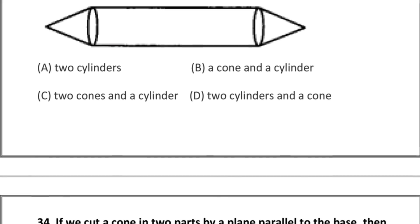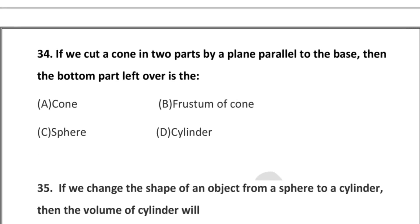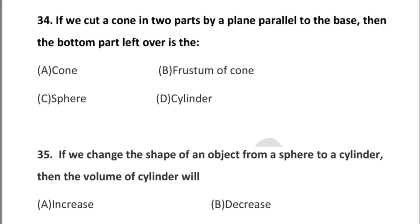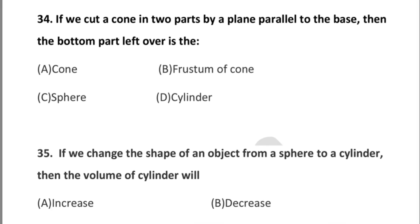Question 34: if we cut a cone into two parts by a plane parallel to the base, then the bottom part left over is — option A: cone, option B: frustum of cone, option C: sphere, option D: cylinder.